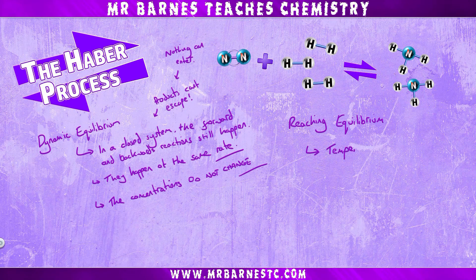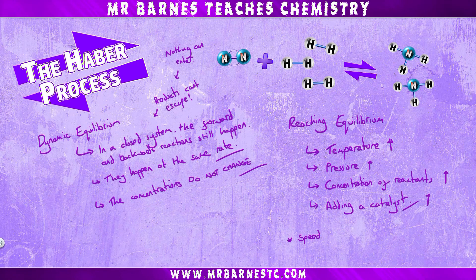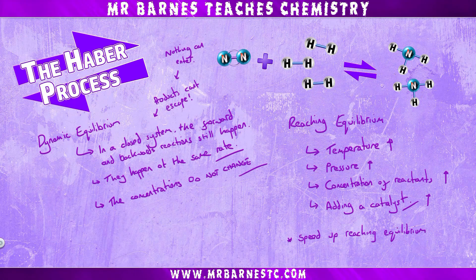There are four ways that you can affect the equilibrium: increase the temperature, the pressure, the concentration of your reactants, and add a catalyst. All of these will get you to an equilibrium quicker, but they don't necessarily all mean that you will get a high yield of ammonia. We'll go through each of those four things and explain how they affect equilibrium.